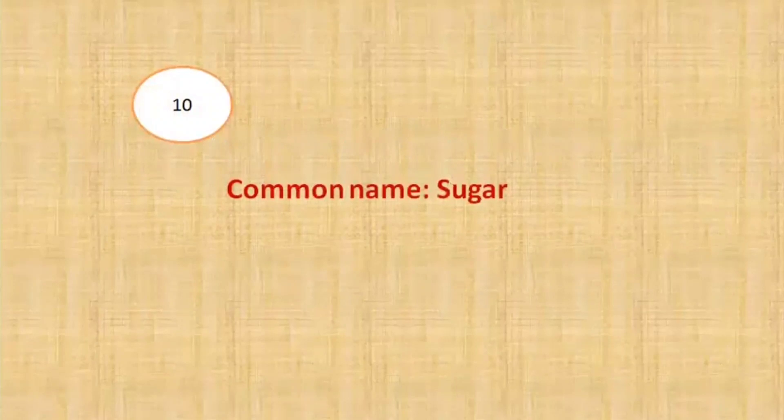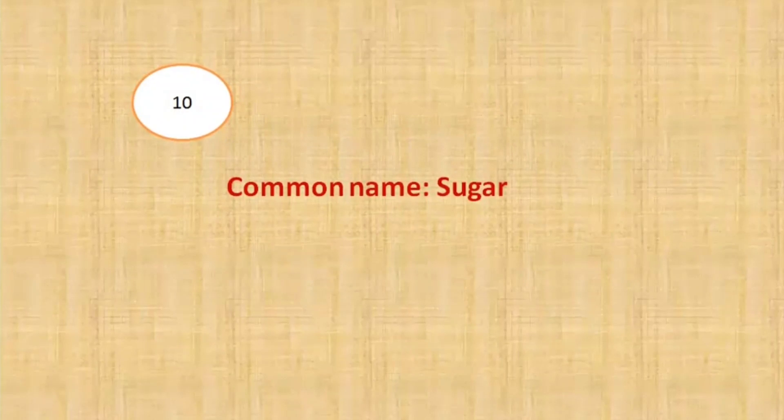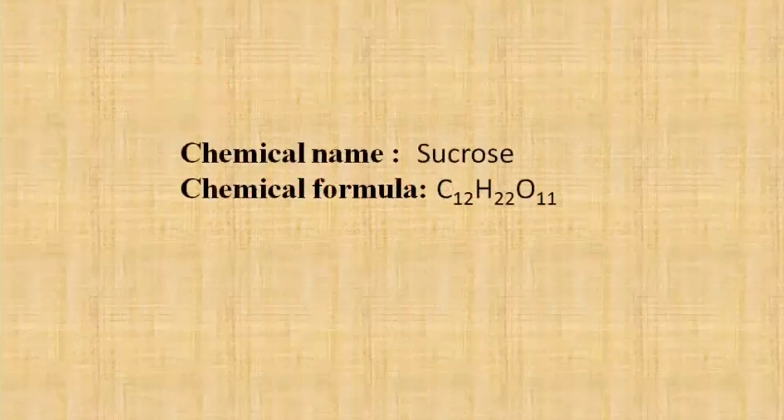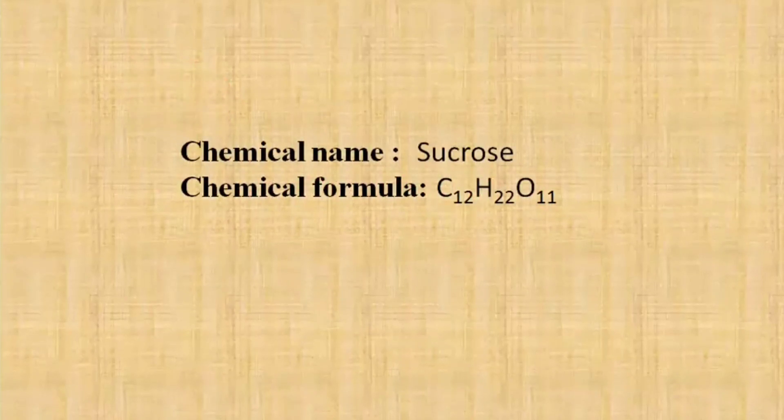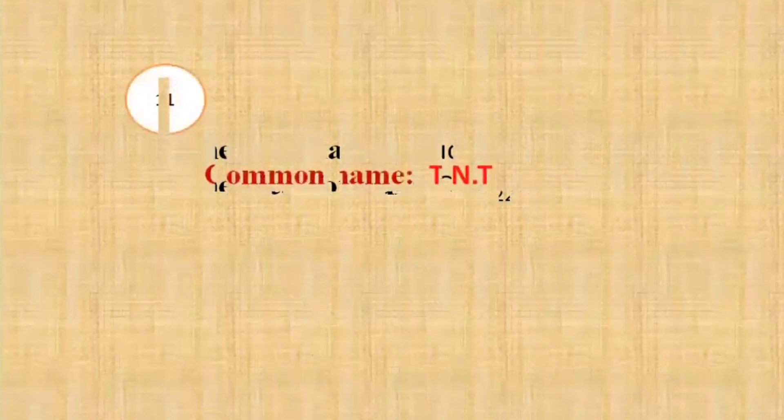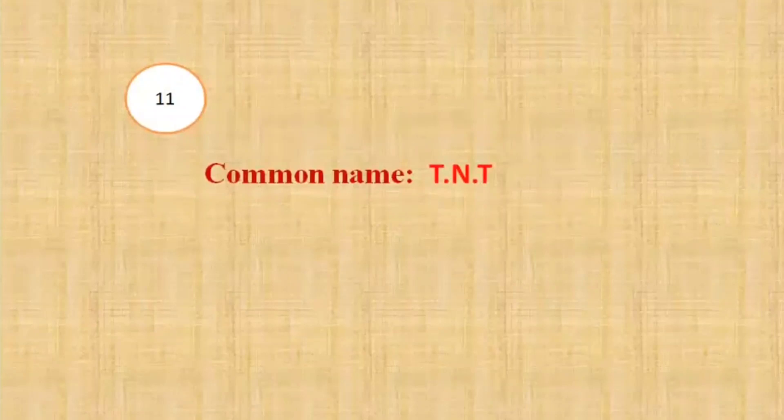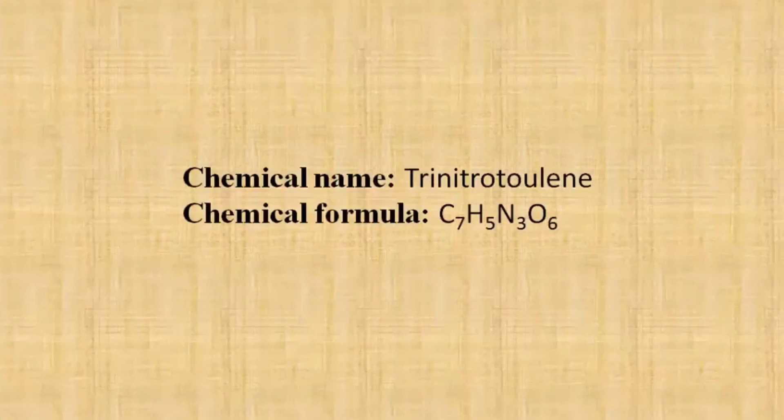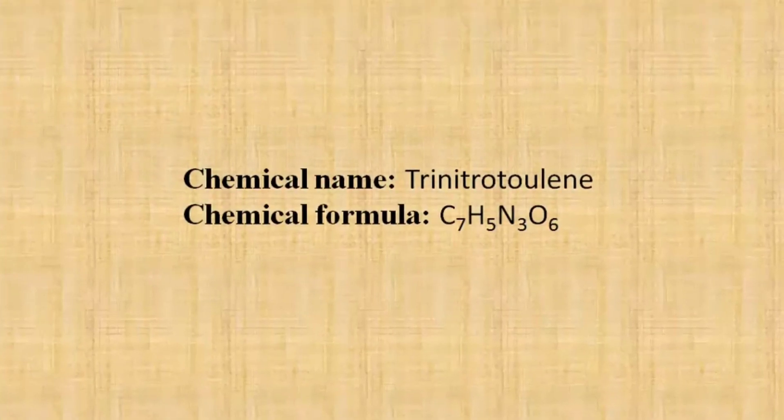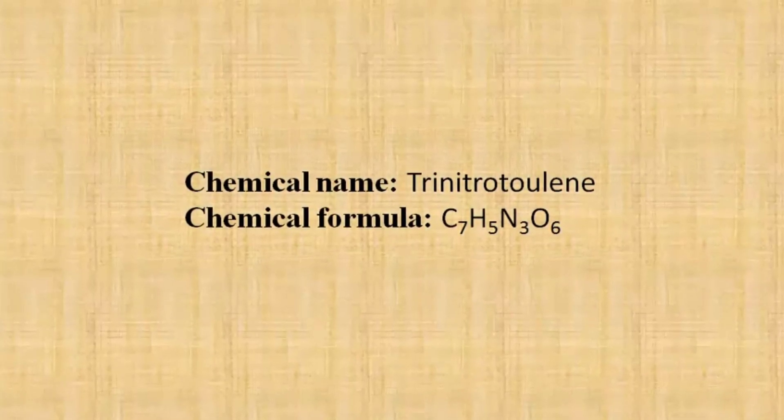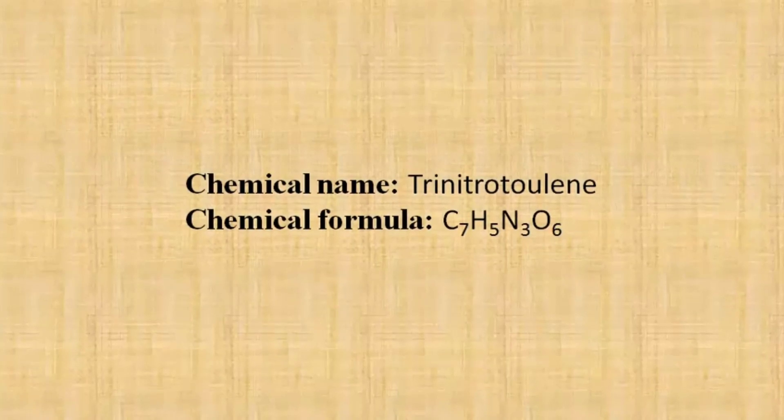Our next question is the chemical name of sugar. The chemical name of sugar is sucrose. It is non-glucose, keep it in mind. Its chemical formula is C12H22O11. What is the chemical formula of TNT? The chemical name is trinitrotoluene and its chemical formula is C7H5N3O6. You can also draw its structure that is in the form of benzene.